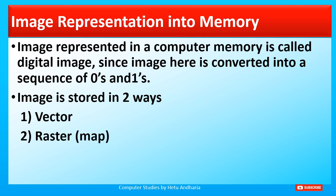Now we come to a very interesting topic — image representation in computer memory. Image representation in computer memory is called a digital image, since images are converted into a sequence of 0s and 1s, just like characters and digits — everything is finally converted into 0s and 1s. Images are stored in two different ways: vector and raster.